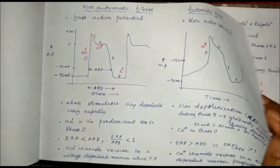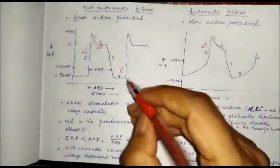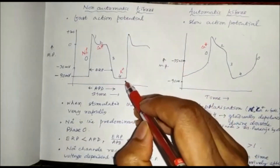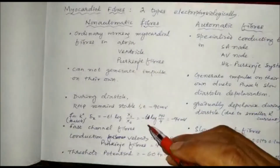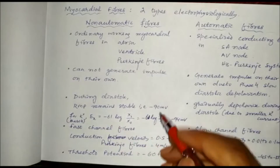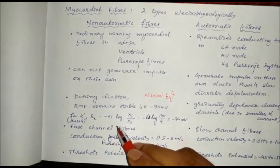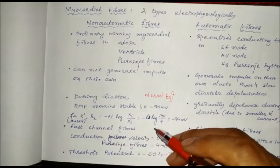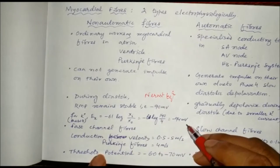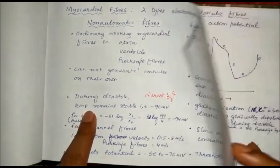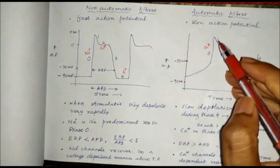During the resting state in non-automatic fibers, the major ion maintaining resting membrane potential is potassium, and this resting membrane potential remains constant. Using the Nernst equation — E_x = −61 log(x_i / x_o) — with inside to outside potassium concentration, we get approximately −94 millivolts. So the resting membrane potential remains stable for non-automatic fibers at around −90 millivolts.